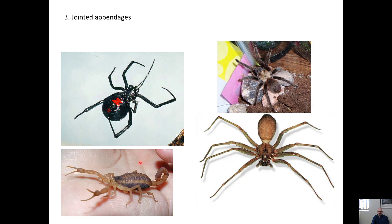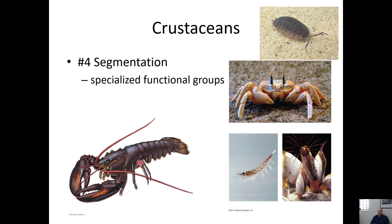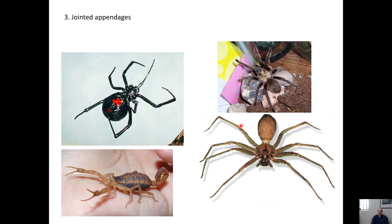Segmentation is another key advantage because different body segments can evolve different functions. This allows for specialized parts like the claws of a lobster, the tail segment, the body plan of a crab, or a sow bug — which is actually a crustacean, closely related to lobsters and shrimp.